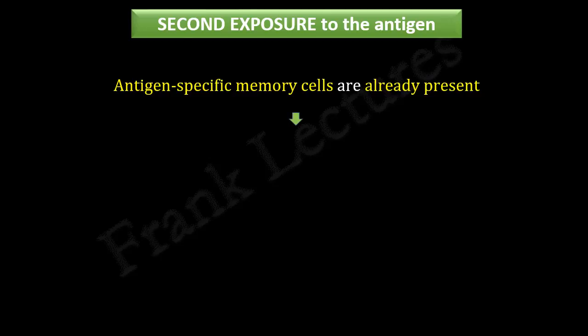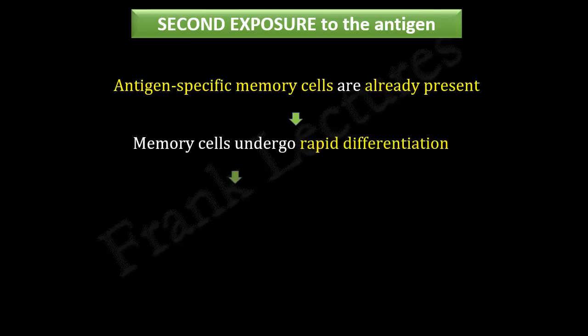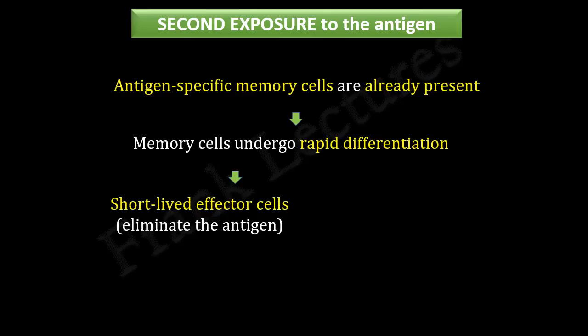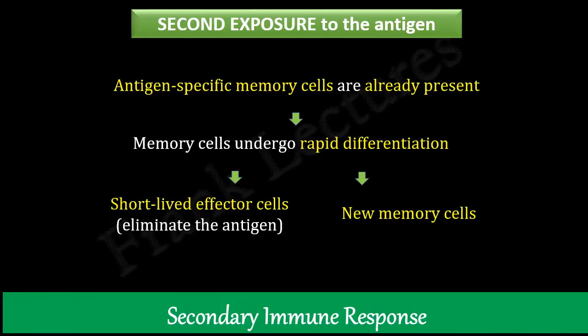As these memory cells encounter the antigen, they undergo rapid differentiation into antigen-specific effector cells that eliminate the antigen. There is a rapid immune response on second exposure to the previously encountered antigen. This is known as the secondary immune response, and this response is the reason that we maintain long-term or even lifelong immunity to certain antigens.